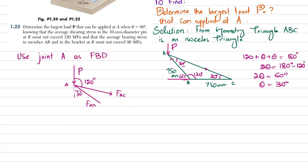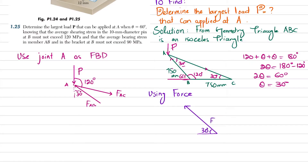Using the force triangle method with vector addition: if we draw FAB making 30 degrees with the horizontal reference line, and then draw P as a vertical downward load, the closing side of the triangle is FAC.